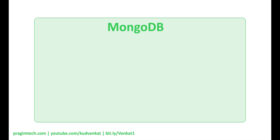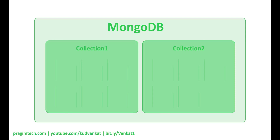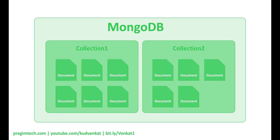In a non-relational database like MongoDB, we do not have tables. Instead, we have collections and documents. A collection, as the name implies, is a collection of one or more documents. If you're from a relational database background, you can think of a collection as a table and documents as table rows.